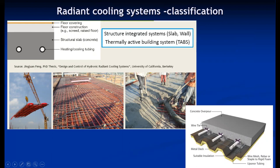Another cut section of the integrated system shows: concrete, then a bottom metal panel where heat is transferred downward, with insulation on top. This is a section fitted on the ceiling. The bottom portion becomes hot or cooled depending on the water circulated through it.